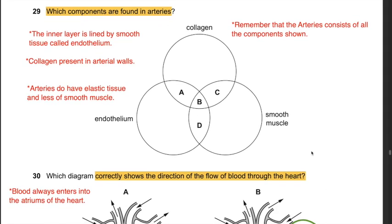Question 29: Which components are found in arteries? Arteries have an inner lining of endothelium, collagen in the arterial walls, and elastic tissue as well as smooth muscle. All three listed components — collagen, endothelium, and smooth muscle — are present in arteries. The answer is B.